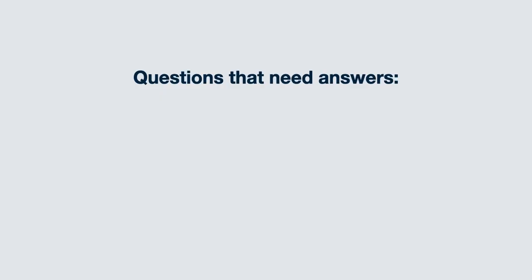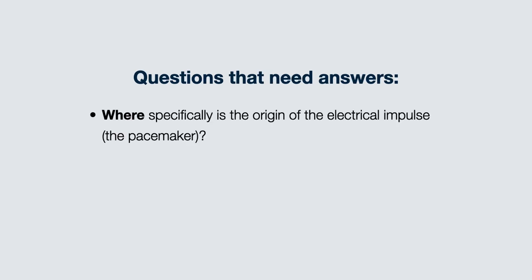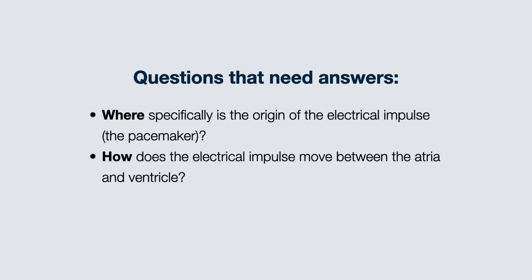To simplify, there are really three questions you aim to answer when looking at an ECG. First, where specifically is the origin of the electrical impulse — the SA node, atria, junction, or ventricular rhythm? Second, how does the electrical impulse move between the atria and ventricle — normally via the AV node, abnormally bypassing it, or is there a block at the level of the AV node?